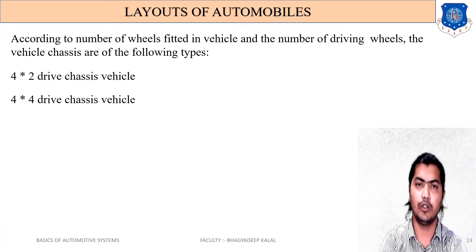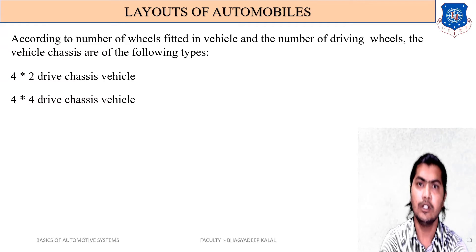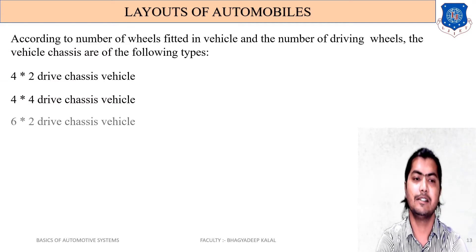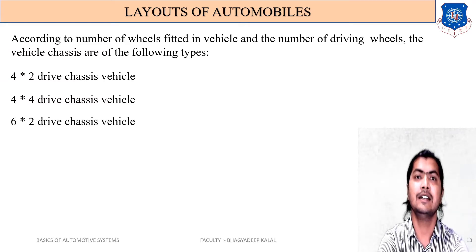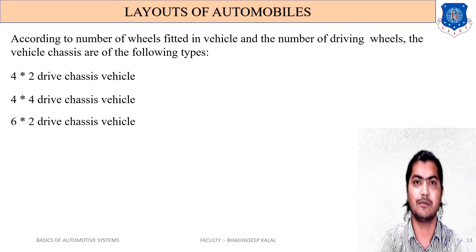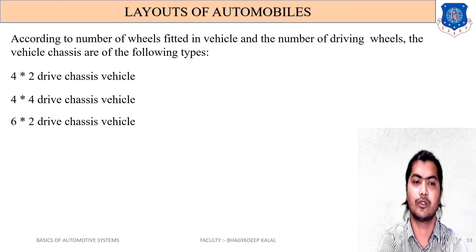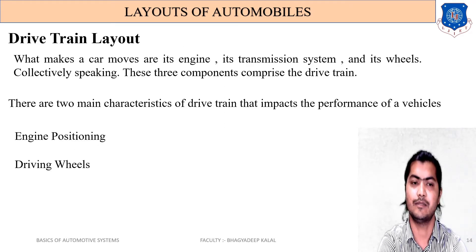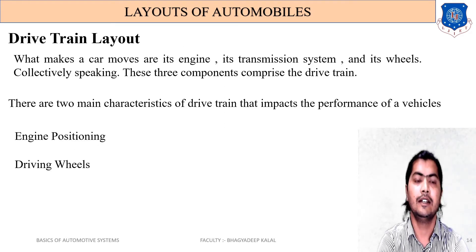Next is 4×4: this means the vehicle has four wheels and power is transmitted to all four wheels. Similarly, 6×2 means the vehicle has six wheels and power is transmitted to only two of them — that is called a 6×2 drive chassis system. And 6×4 means a six-wheel vehicle with power transmitted to four wheels.